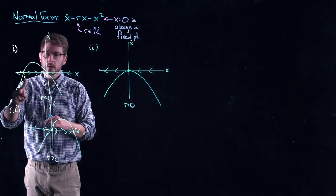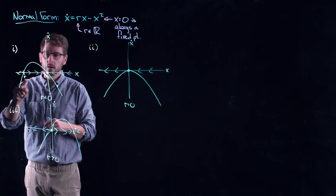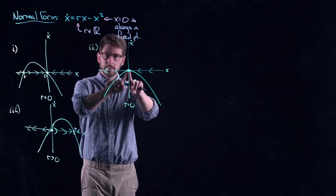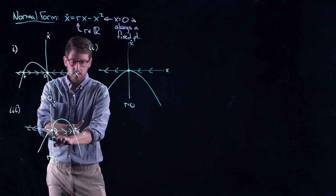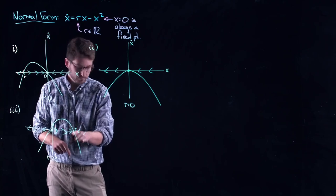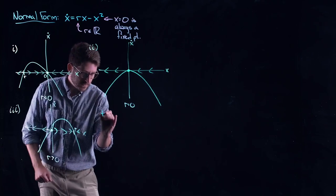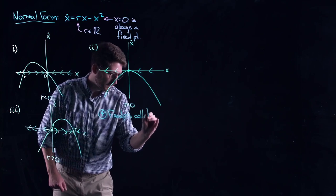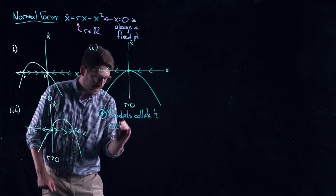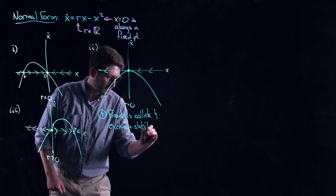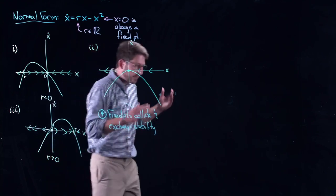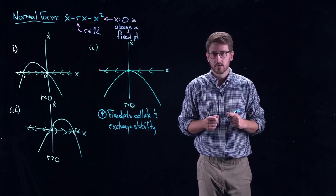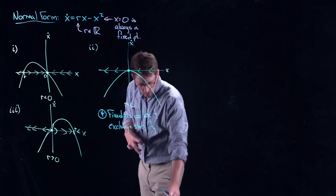In the r < 0 case, the non-trivial fixed point at r is unstable and zero is stable. They come together and collide at zero. Then the non-trivial one moves through it and takes the stability of zero. What happens is: fixed points collide and exchange stability. I never lost one, I never gained one — they hit each other and it's like a handoff. One says, 'you can take my stability here.' That is what is called a transcritical bifurcation.